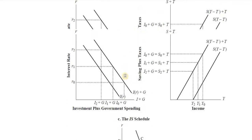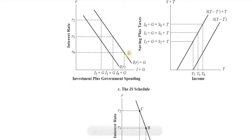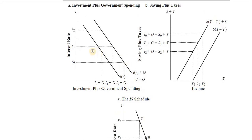Now let's get on to the factors that could cause a shift in the IS curve. The diagram looks difficult but it is not. The moment we incorporate the government sector into the investment curve, the investment curve shifts rightward because government expenditure is autonomous to the rate of interest — it does not depend upon the rate of interest.